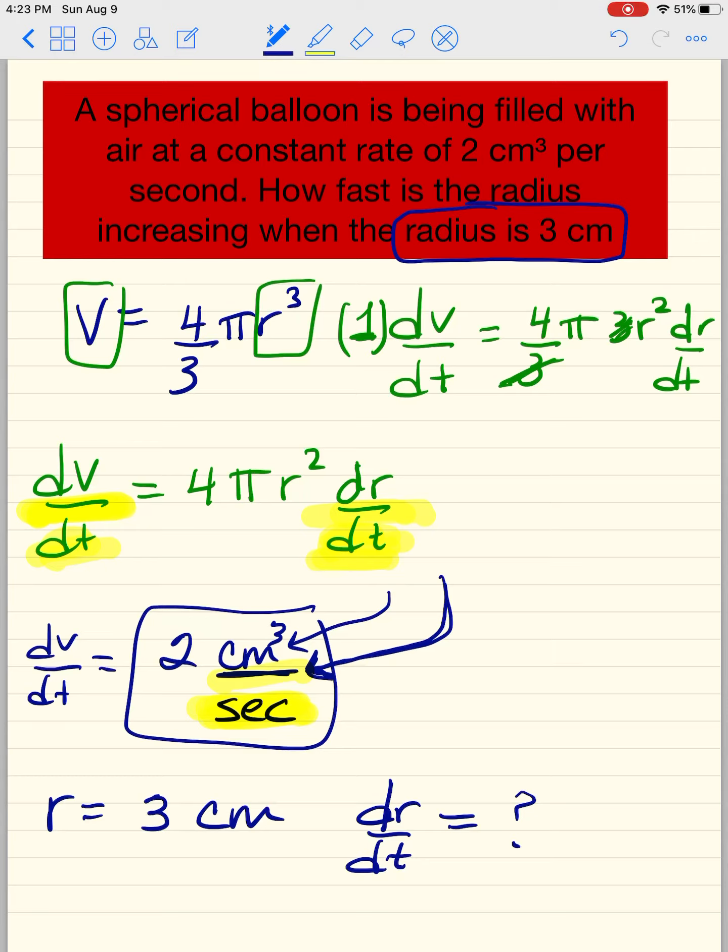So what do we do? We have everything. All we got to do is plug it in, plug it in right into here. So dV/dt is 2, and it's cubic centimeters per second. If the units are not there, your answer is wrong. r is 3, so we're going to put 3 squared, and then dr/dt is what we are looking for.